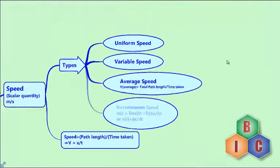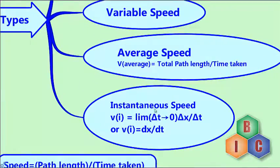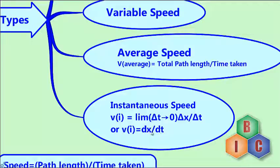That is called instantaneous speed — the fourth type of speed. Instantaneous speed is the speed of a body at any instant of time. For example, what was the speed of the body when the time was 27 minutes 34 seconds? To get this, we use the calculus formula: limit of Δx/Δt as Δt tends to 0, which equals dx/dt — the rate of change of path length.